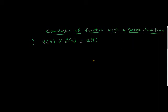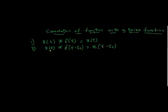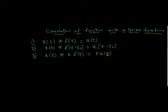We can also generalize this. If x of t is convolved with a time-shifted delta function, then the original signal will also shift by the same amount: x(t) * δ(t − t₀) = x(t − t₀). The third property is that x(t) convolved with k·δ(t) equals k times x(t), where k is a scaling factor.